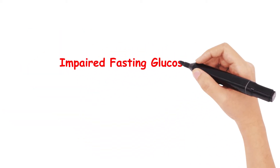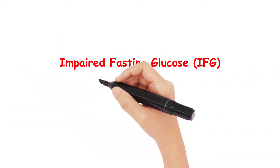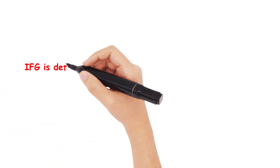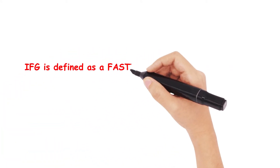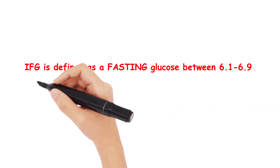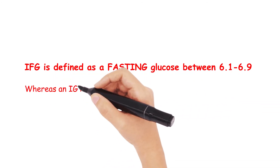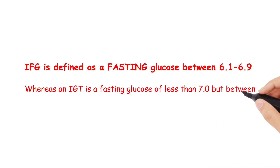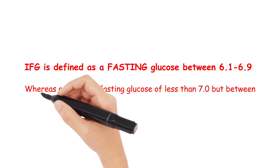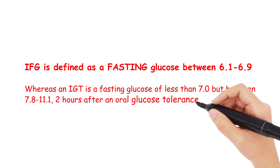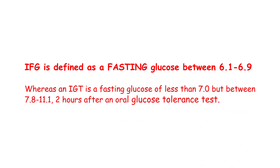We should also touch on impaired fasting glucose and impaired glucose tolerance. Impaired fasting glucose is defined as a fasting glucose of between 6.1 and 6.9, whereas impaired glucose tolerance is a fasting glucose of less than 7, but between 7.8 and 11.1, two hours after an oral glucose tolerance test.